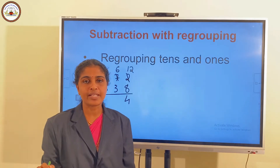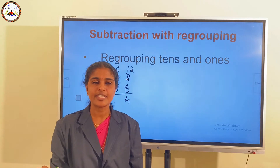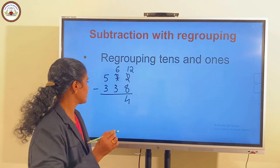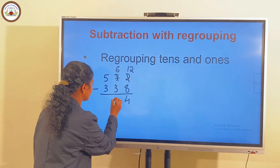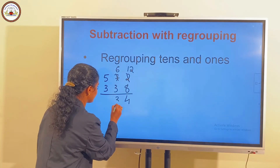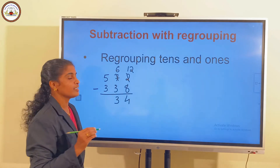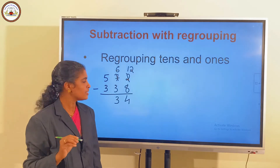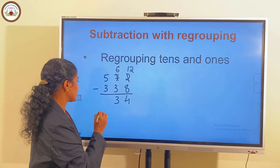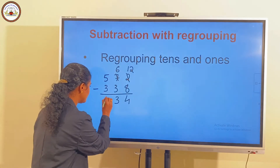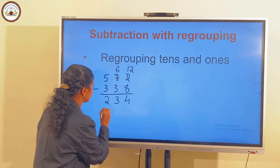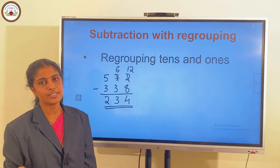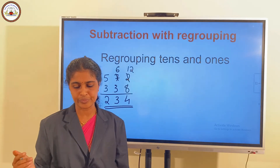And 6 minus 3 is 3. 5 minus 3 is 2. So, the answer is 234.